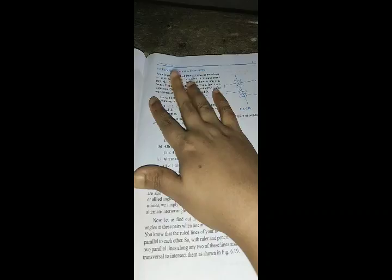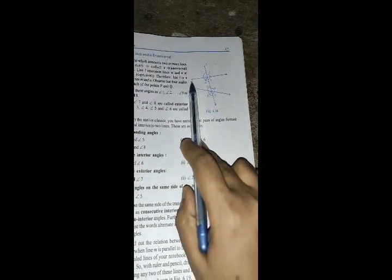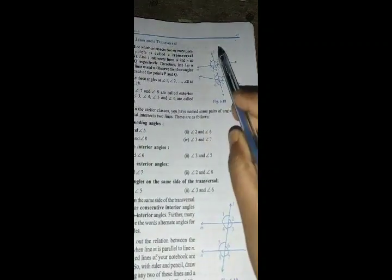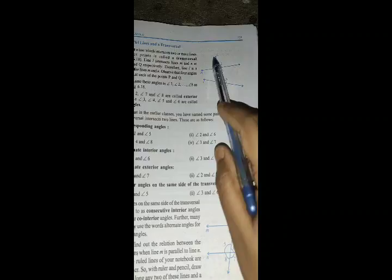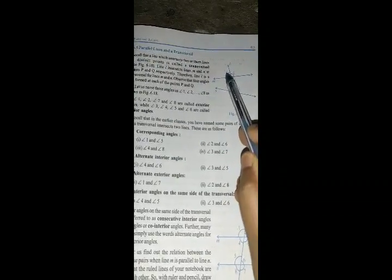In this exercise on lines and angles, we will learn about parallel lines and transversals. In figure 2, we have two parallel lines. This line is M, this is line N, and this is line H.